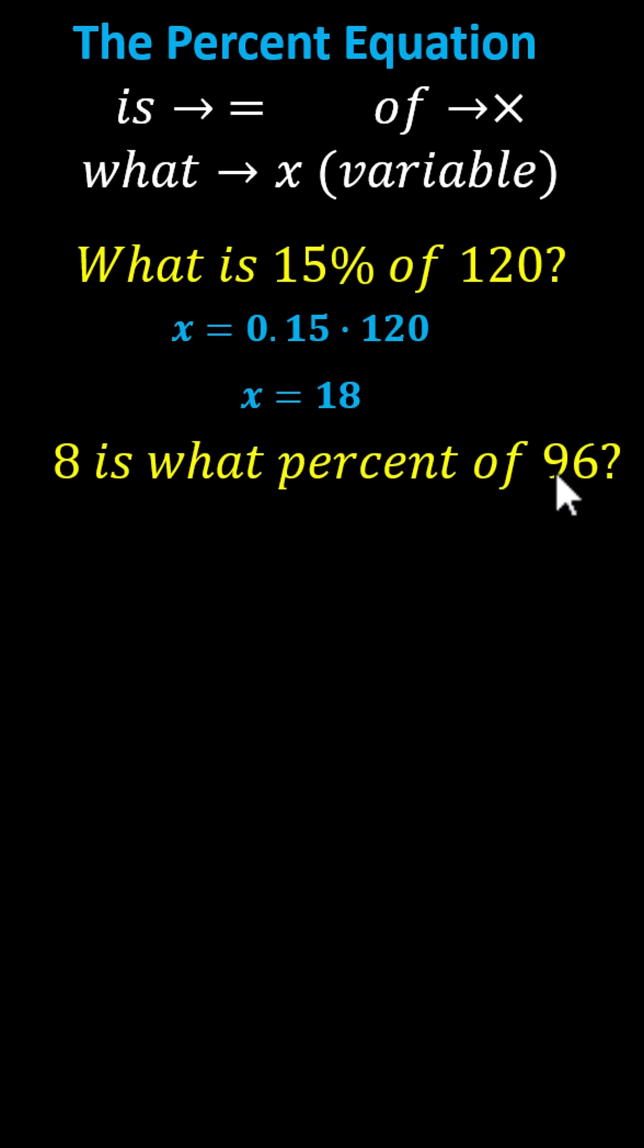Next, let's consider: 8 is what percent of 96? For our equation, we write 8, 'is' means equals. For 'what percent,' we use a variable. I'm going to use p to remind myself I need to convert p to a percentage. 'Of' means multiply, and then we have 96. To solve for p, we divide both sides by 96.